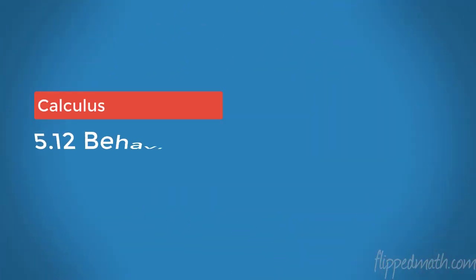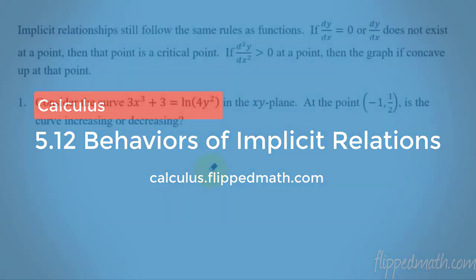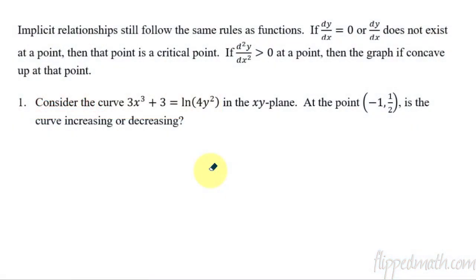Hello, calculus kids. This is Mr. Bean, and we are in our last lesson for unit 5. Thank goodness you've made it. We're actually done with derivatives after this. Well, not totally done, but we're going to focus on the other half of calculus when we get to unit 6. Today's lesson is focused on implicit relationships again, so when we do implicit differentiation, and how basically the behavior of the graph works.